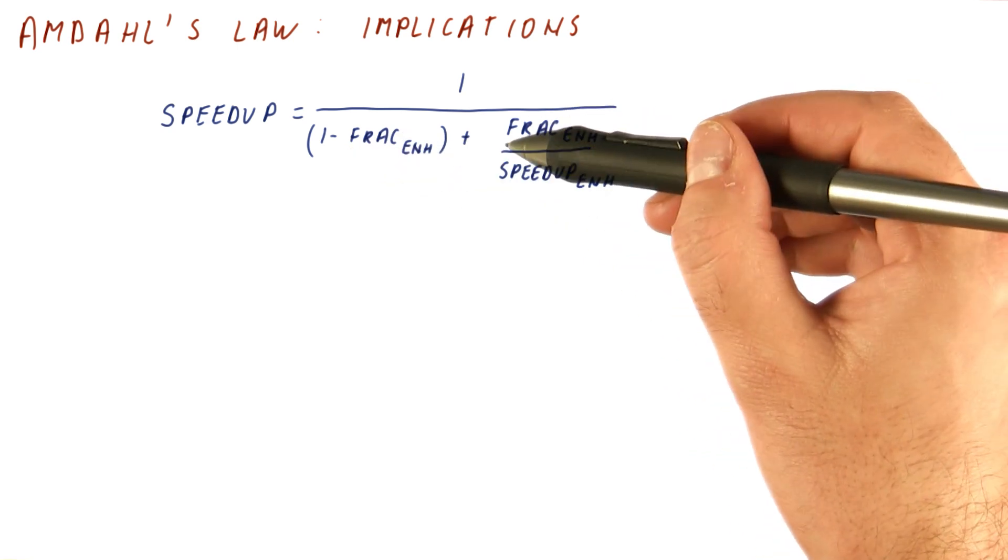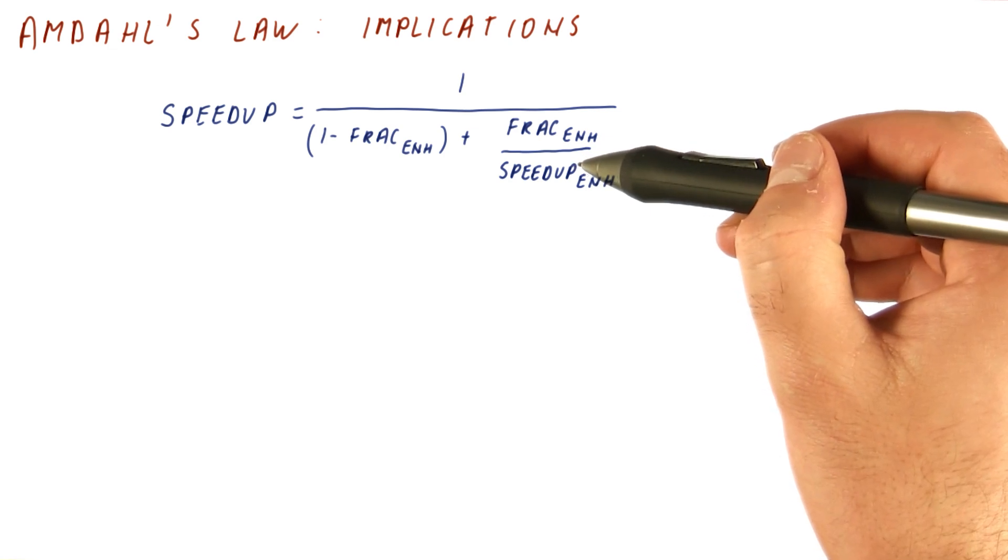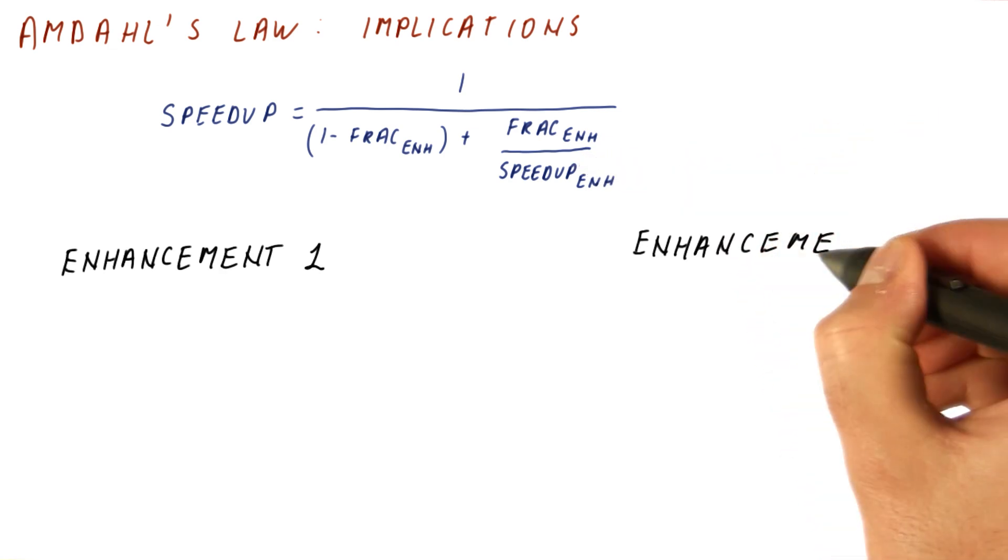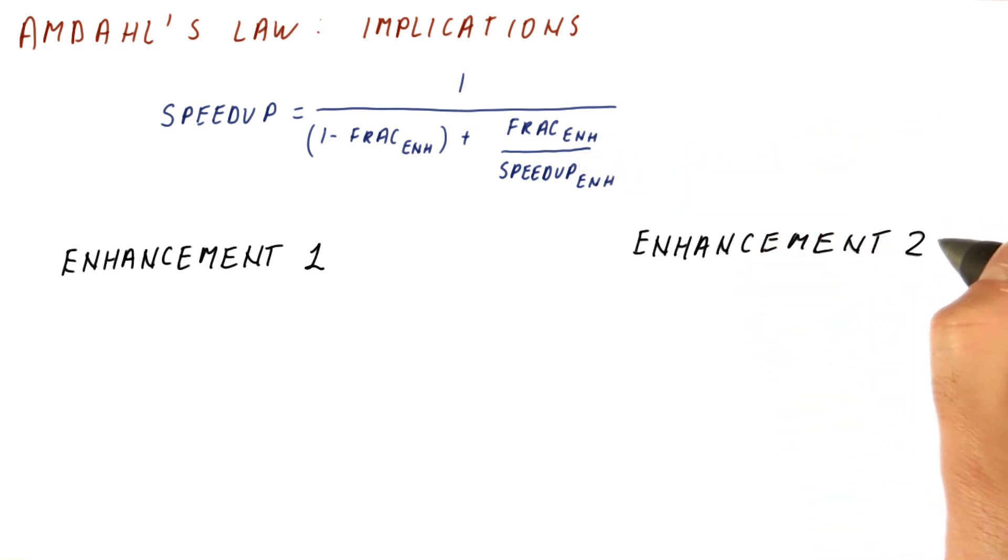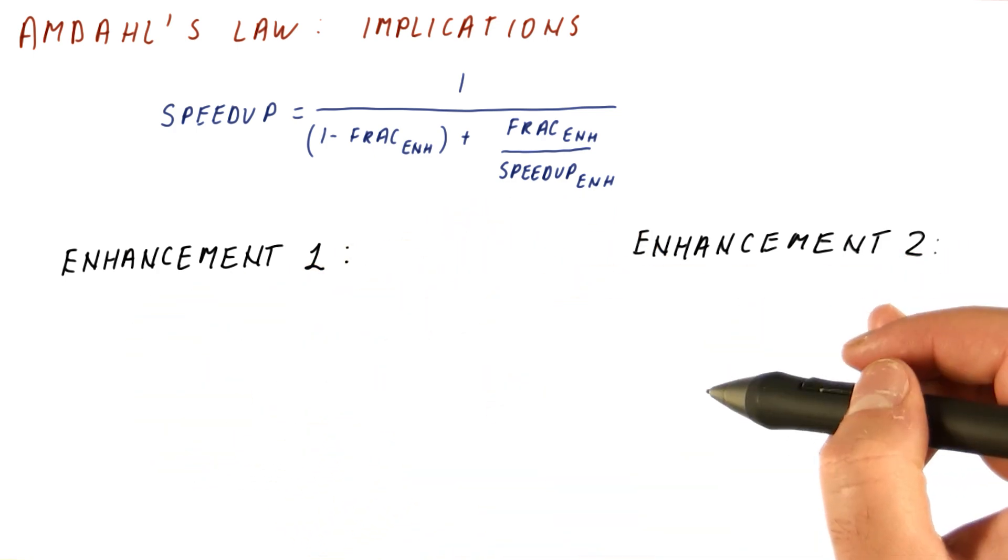Plus the fraction that we did enhance, and that fraction became so much faster because of the speedup on that part. So now, let's compare two possible enhancements. This is the first enhancement, this will be the second enhancement.